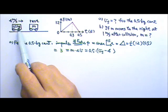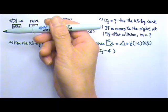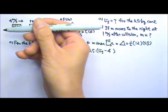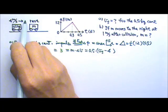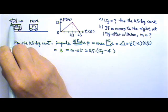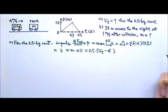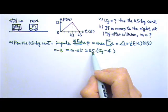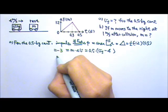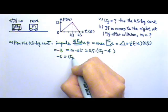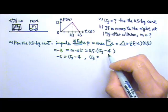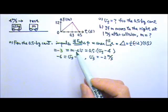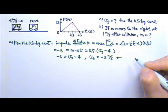During the collision, the force on the 0.5 kg cart goes to the left, which means the impulse goes to the left. If we say the 4 m/s initial velocity is positive, then this force is negative and the impulse is negative 3 because it goes to the left. Dividing both sides by 0.5 gives negative 6 equals V_final minus 4, so the final velocity is negative 2 m/s — a leftward velocity, opposite to the initial positive direction.